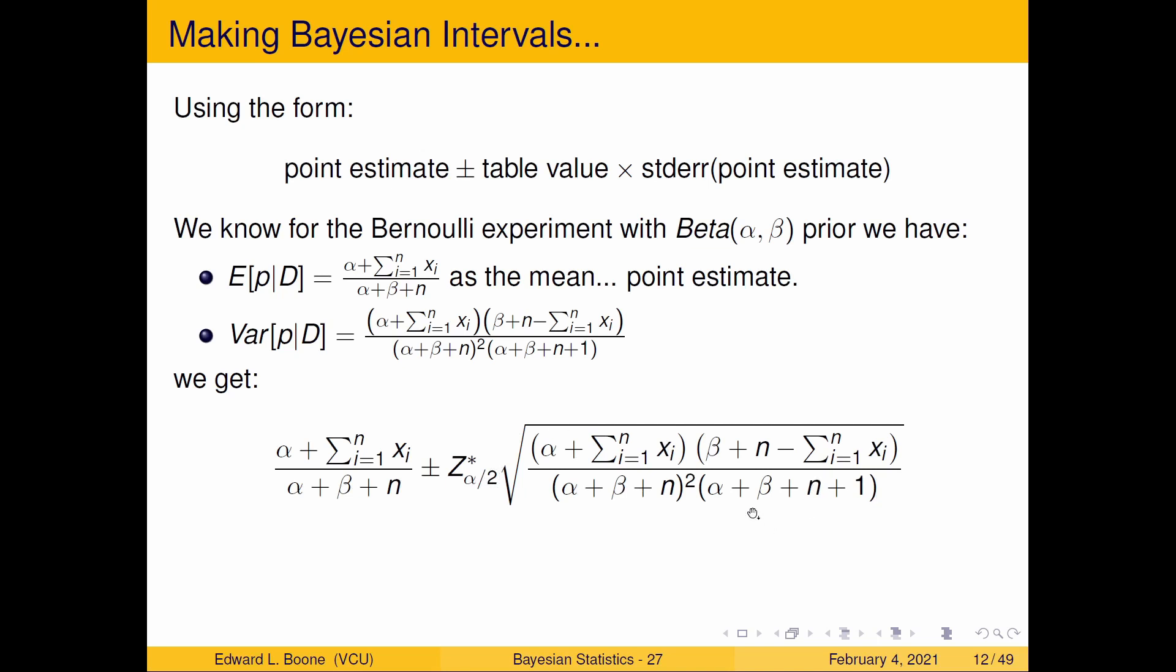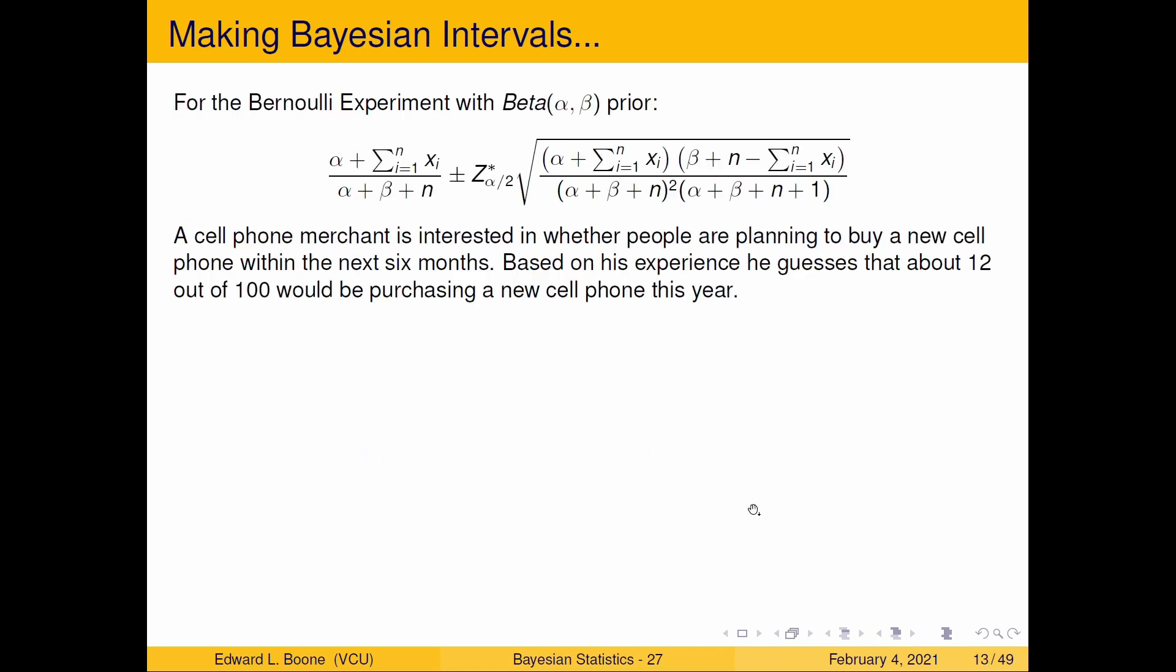Let's look at an example and we'll see how this works. A cell phone merchant is interested in whether people are planning to buy a new cell phone or not within the next six months. Based on his experience he guesses that about 12 out of 100 would be purchasing a new cell phone this year or in the next six months. So how can we turn this information of his guess into prior information because he has no other information other than his guess?